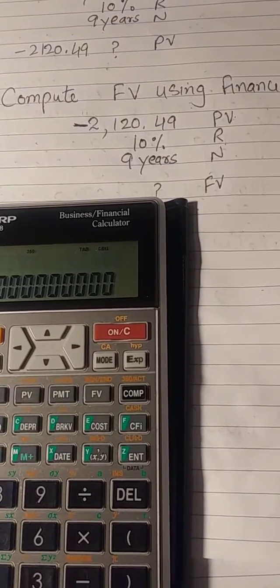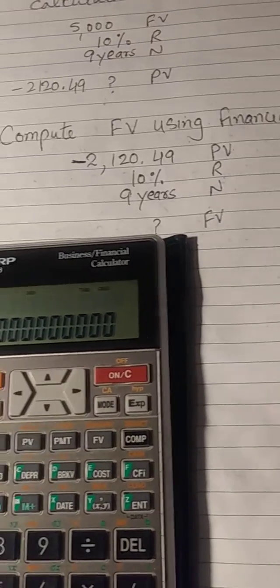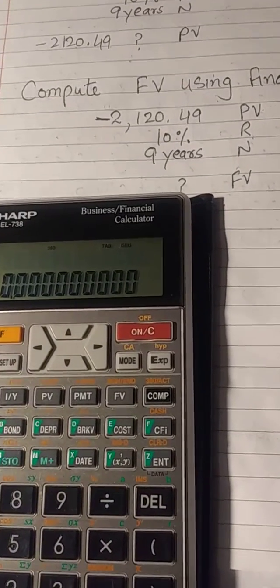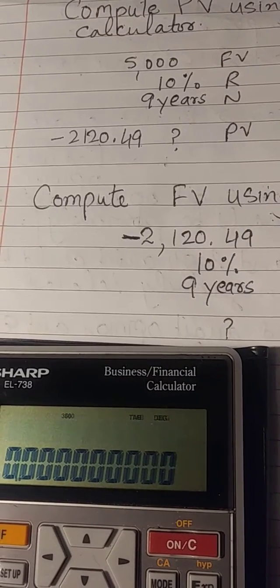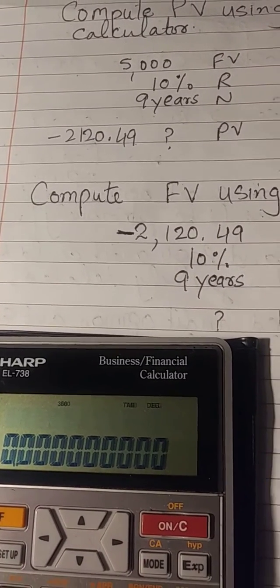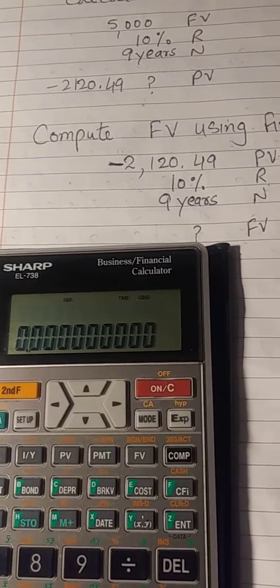This video is about how to compute future value using a financial calculator. In one of the previous videos, I computed present value and got the answer 2120.48 or 49, so I will use the same present value.